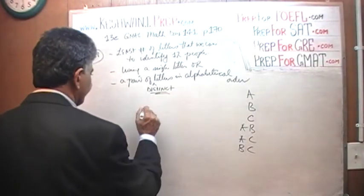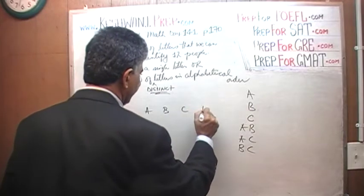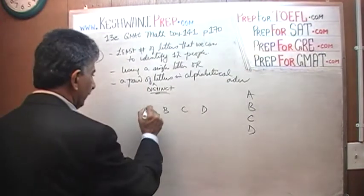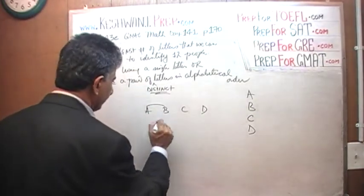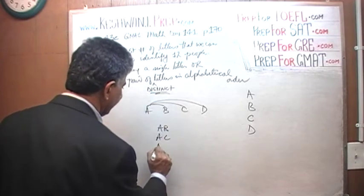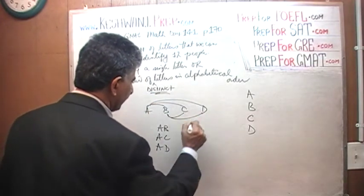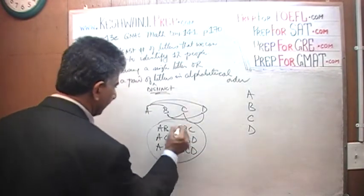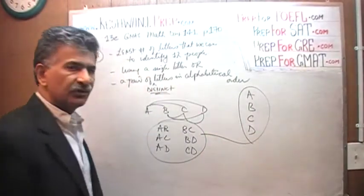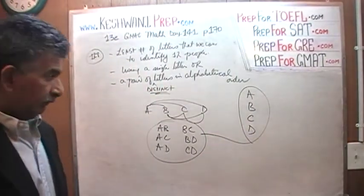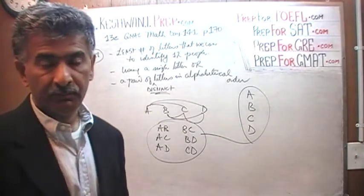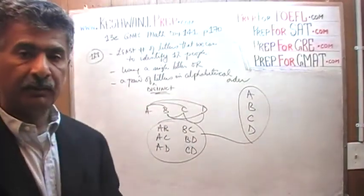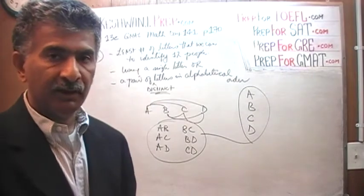Let's try four letters: A, B, C, D. We get four single-letter identifiers, plus pairs AB, AC, AD, BC, BD, CD — that's six pairs. Six plus four singles equals ten. So with four letters we can identify a maximum of ten people. But we have 12 people, so four letters is clearly not enough.